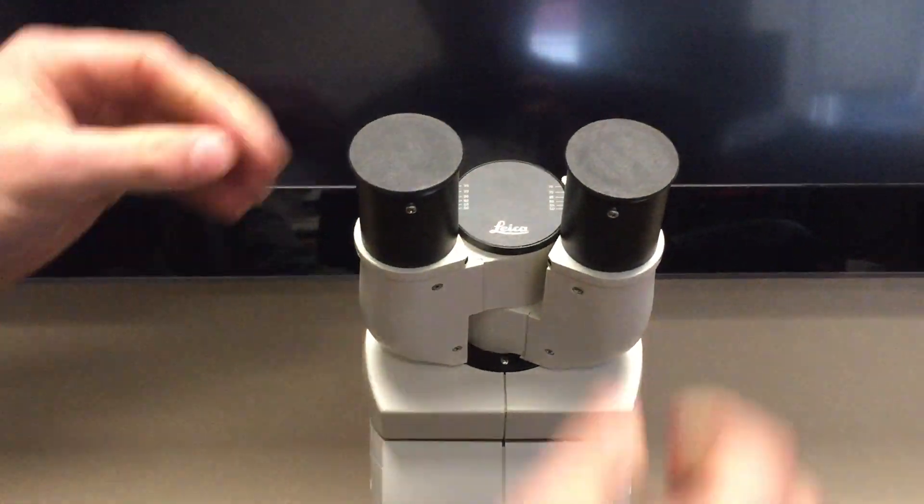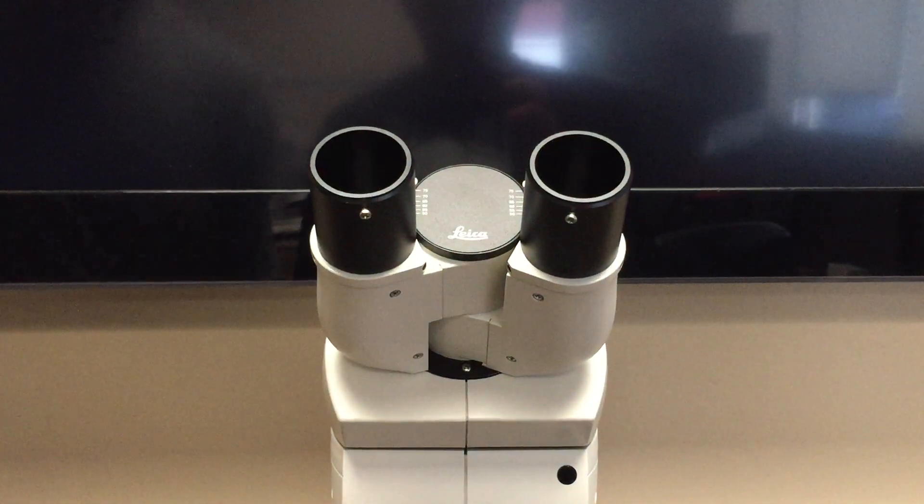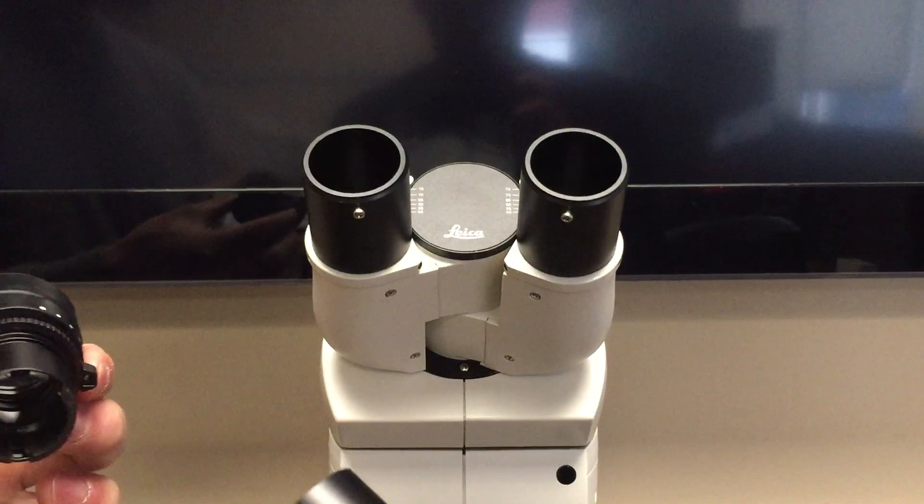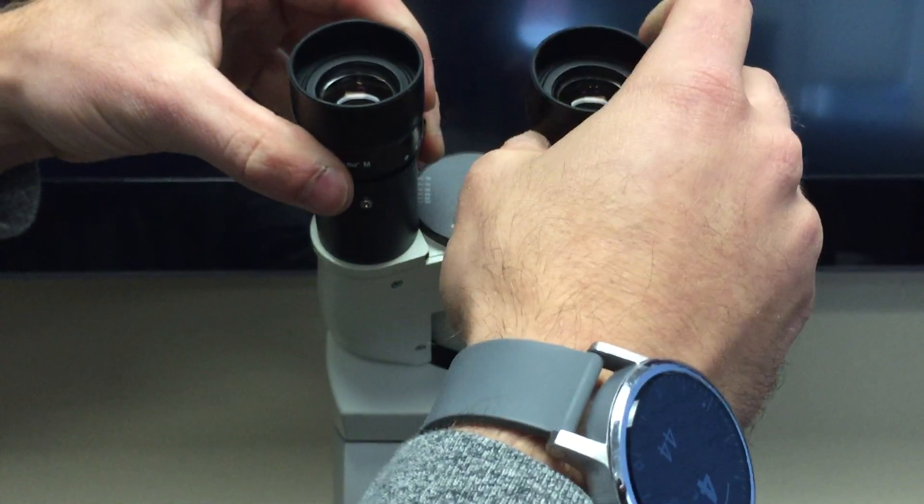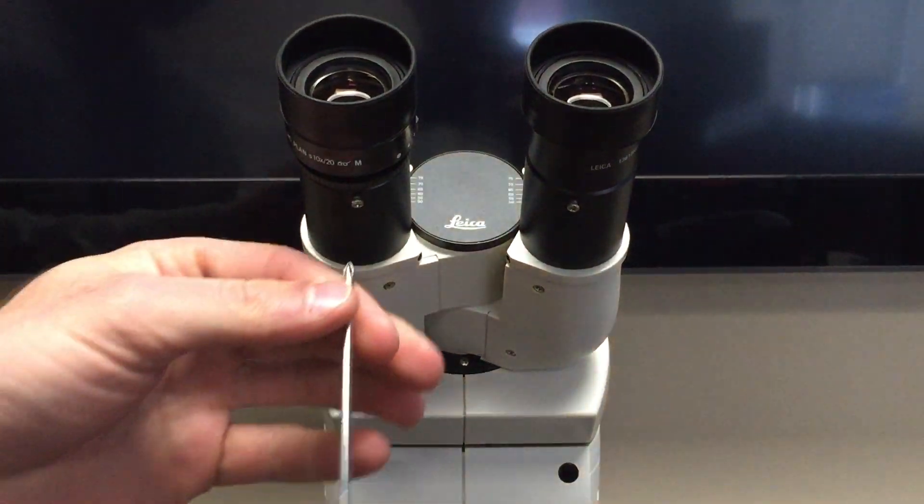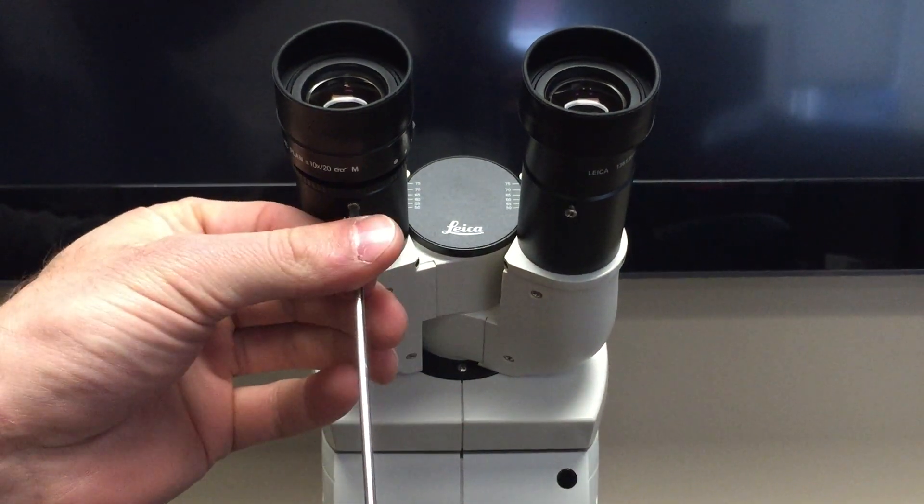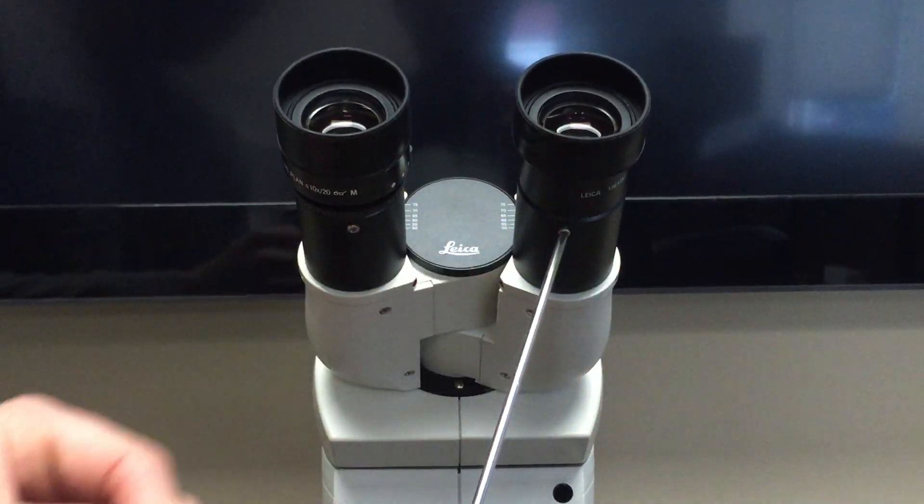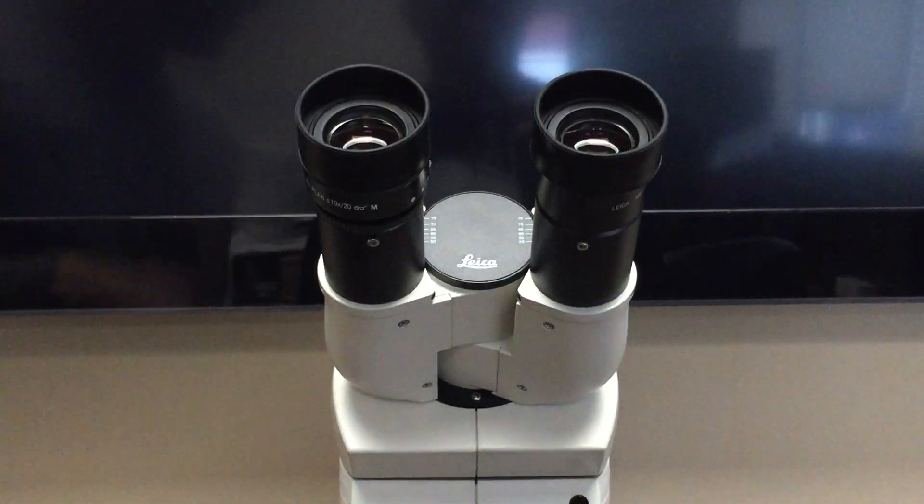Remove the two caps over the eye tubes, grab your two eyepieces, and insert them in the eye tubes. Using the screwdriver, tighten down the lock screws, and now your eyepieces are set and locked in place.